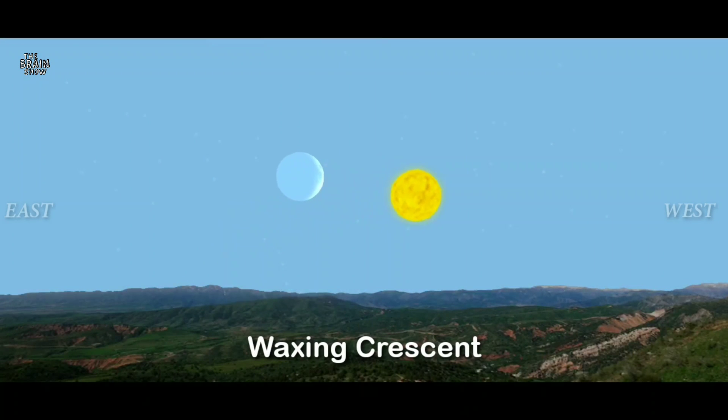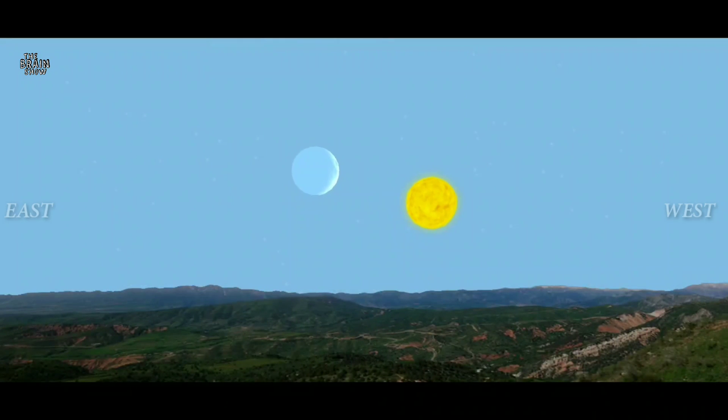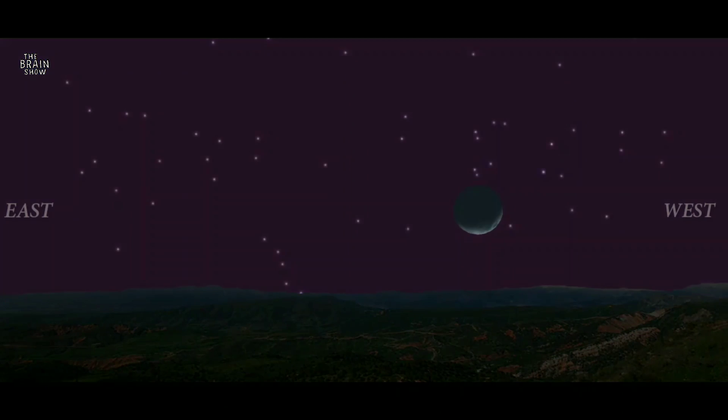The waxing crescent occurs two days after the new moon. The moon rises one hour behind the sun and follows it during the day.